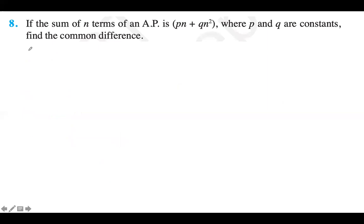If the sum of n terms of an AP is Pn plus Qn squared, where P and Q are constants, find the common difference. To find common difference, take Sₙ and subtract Sₙ minus 1. First, find S₁.